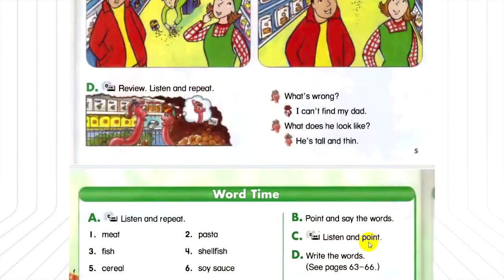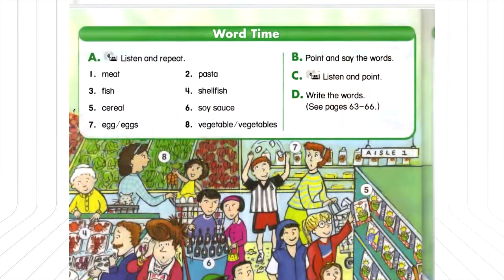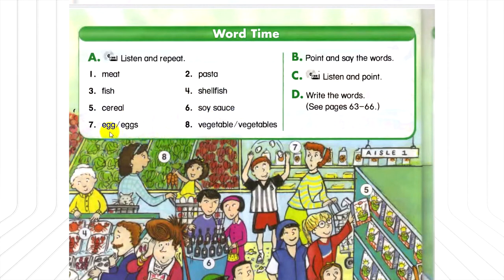Unit 2, page 6. Word time A. Listen and repeat. Number 1: Meat. Number 2: Pasta. Number 3: Fish. Number 4: Shellfish. Number 5: Cereal. Number 6: Soy sauce. Number 7: Eggs. Number 8: Vegetables.